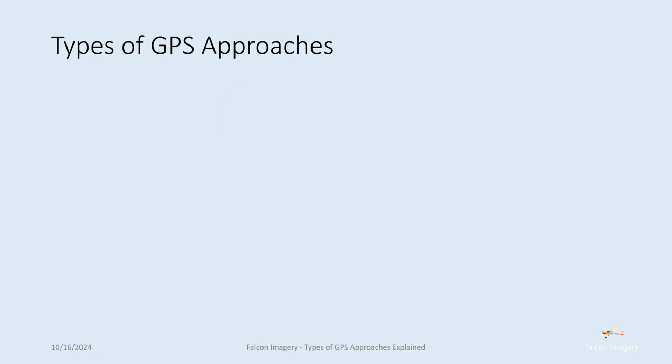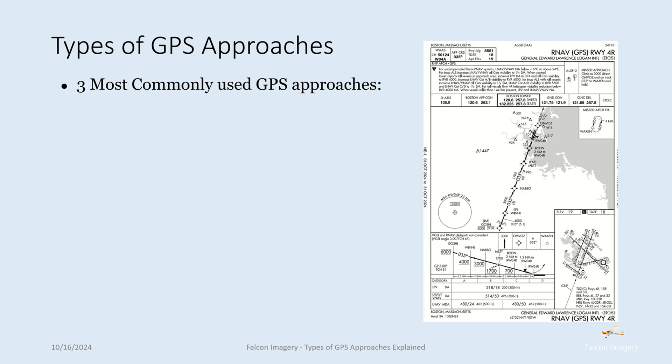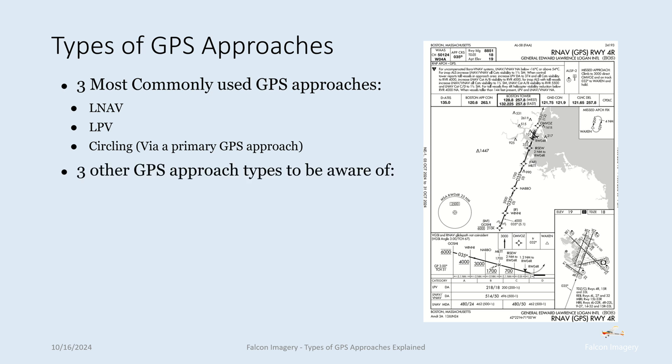Types of GPS approaches explained. We've got several types to discuss. The three most commonly used GPS approaches would be the LNAV approach, the LPV approach, and a circling approach associated with some other GPS approach like an LNAV or an LPV. There are three other GPS approach types we also need to be aware of: the LNAV plus V for vertical guidance, the LNAV/VNAV approach, and the LP approach.